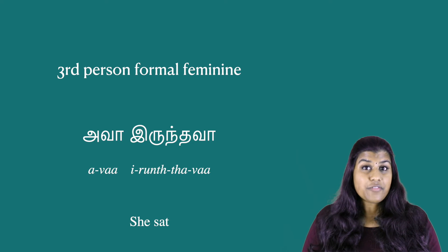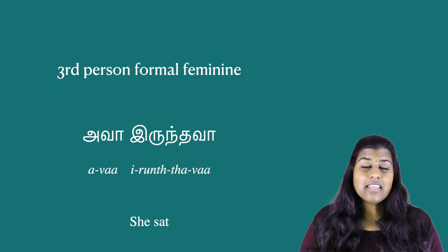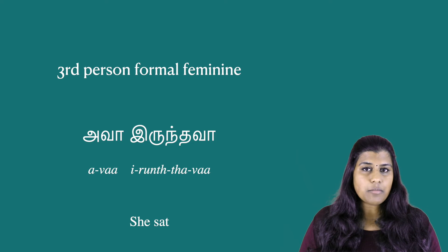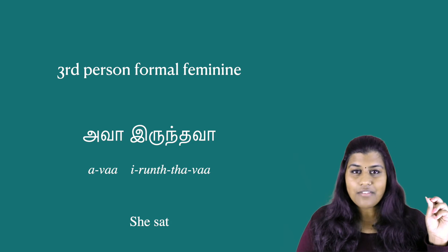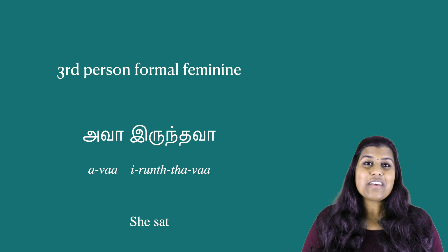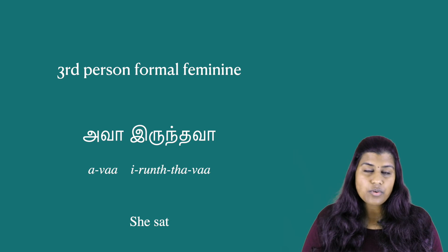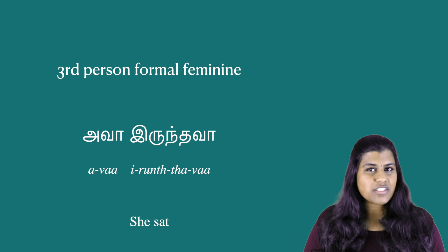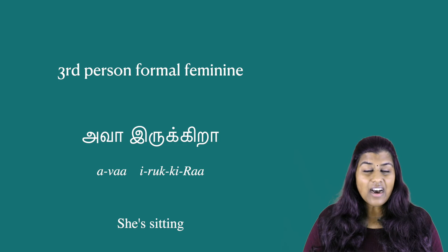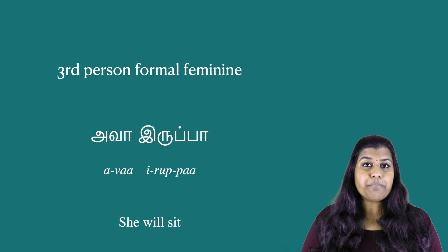Next up we've got the female version — polite third person, 'aval'. Now 'aval' doesn't exist in written Tamil; in spoken Tamil the men have taken over 'avar', so women use 'aval'. If you're referring to an aunt, mum, or anyone you want to show respect to, use 'aval' — but again, only in spoken Tamil. Aval irundal. Aval irukkiral. Aval irppal.